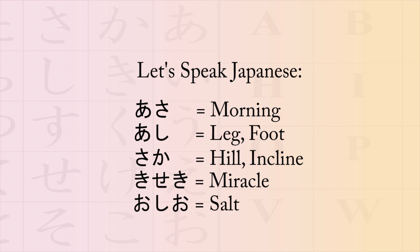Going over the words covered today: the first is asa for morning; the second is ashi for leg or foot; the third is saka for hill or incline; the fourth is kiseki for miracle; and the fifth and last is oshio for salt. Once again: asa, ashi, saka, kiseki, and o-shi-o for oshio.